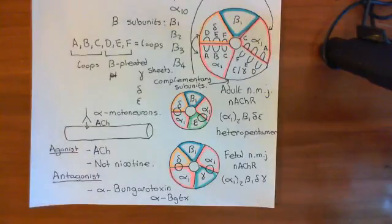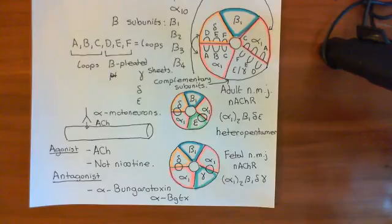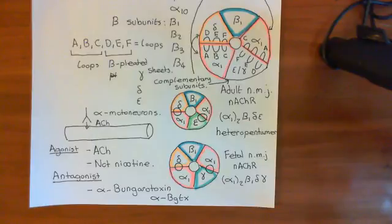So alpha-bungarotoxin is a competitive antagonist for the acetylcholine binding site at neuromuscular junction nicotinic acetylcholine receptors. In the next video, we'll continue discussing nicotinic acetylcholine receptors and move on to the ganglionic form.